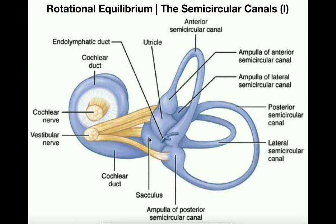The second thing to clear up is that the utricle and the saccule are pretty much the same thing. There is only one major difference, which we'll discuss at the end — it's an easy difference to learn. The workings of the utricle and the saccule are identical. The two organs of the vestibule basically detect two major changes in equilibrium.